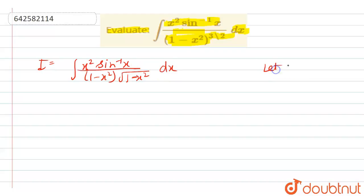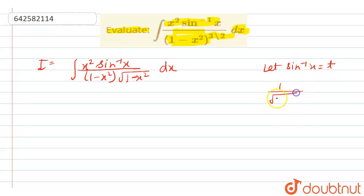Now, let us suppose sine inverse x is equal to t. If we differentiate both sides, we get 1 upon square root of (1 minus x squared) dx equal to dt.